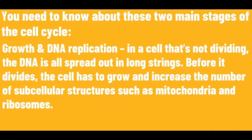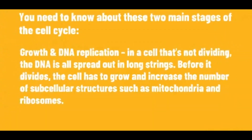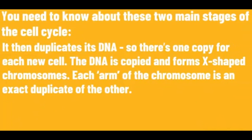You need to know about these two main stages of the cell cycle. The first is growth and DNA replication. In a cell that is not dividing, the DNA is all spread out in long strings. Before it divides, the cell has to grow and increase the number of subcellular structures. It then duplicates its DNA so there is one copy for each new cell. The DNA is copied and forms X-shaped chromosomes, and each arm of the chromosome is an exact duplicate of the other.